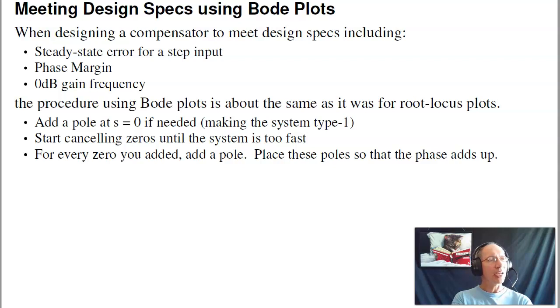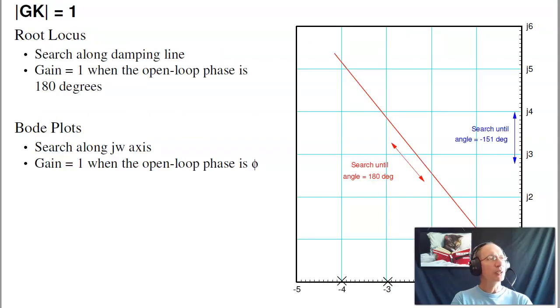For every zero that you add, add a pole. If you add three zeros, you need to add three poles to make sure you're not differentiating. Place those poles so that you get the right phase at the frequency you care about. And this is probably easiest to go through an example.